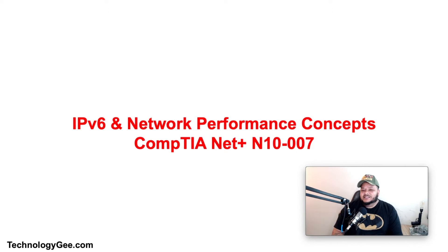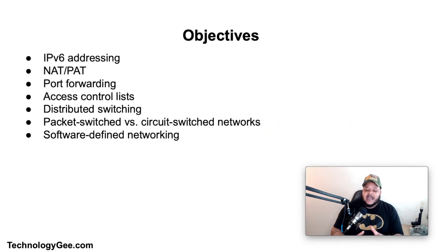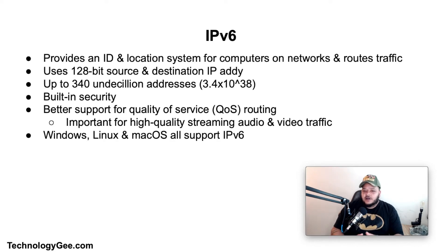What's up everybody, this is your boy Tech G back with another video to help you successfully pass the CompTIA Network+ N10-007 certification. In this video you're going to learn about IP version 6 addressing and network performance concepts such as NAT, PAT, port forwarding, access control lists, distributed switching, packet switch versus circuit switch networks, and software defined networking.